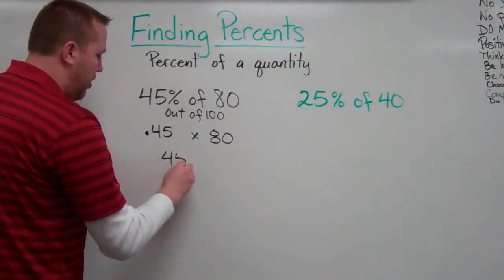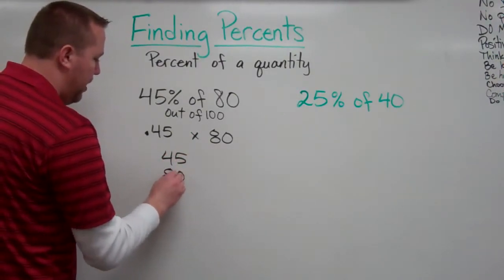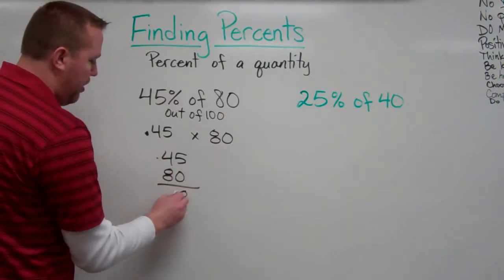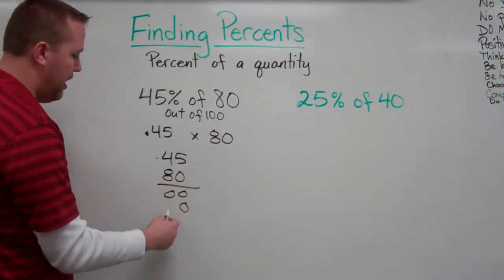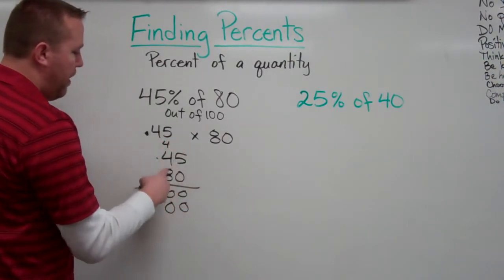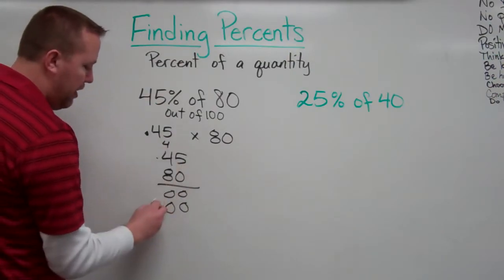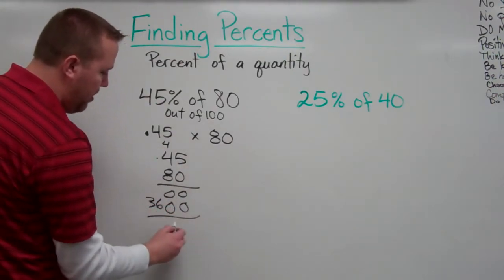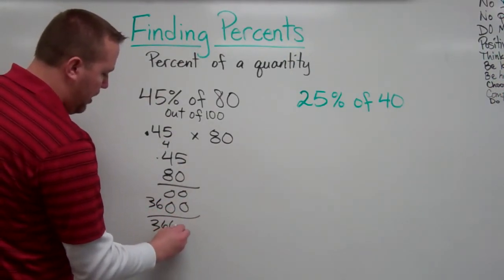So, we just go ahead and do the regular algorithm here for multiplication. We know that that's all going to be zeros. We automatically put that zero down there and start multiplying. 8 times 5 is 40. 8 times 4 is 32 plus 4 is 36. So that equals 3600.